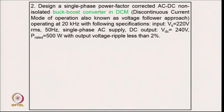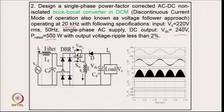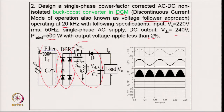The second example: design a single phase power factor corrected AC-DC non-isolated buck-boost converter in discontinuous current mode using the voltage follower approach, operating at 20 kHz. Specifications: 220 V, 50 Hz single phase supply, DC output 240 V, power 500 W, output voltage ripple less than 2 percent. The typical circuit has an EMI filter, a diode rectifier, and a buck-boost converter designed in DCM, where only the output voltage is regulated since it is in DCM.